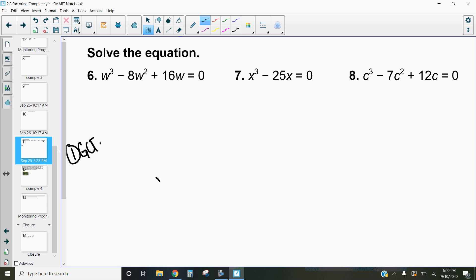Step one, find your, see if there's a greatest common factor. If there is, factor it out. If not, then we'll move on to step two.